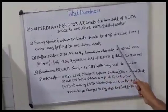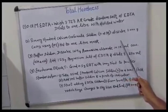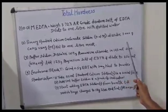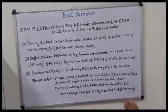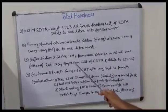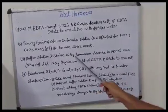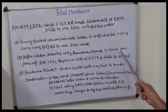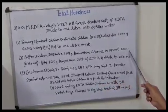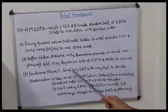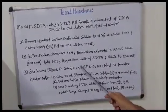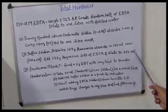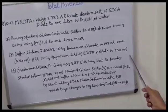This gives us 0.01 molar primary standard calcium carbonate solution. We also make use of a buffer solution by dissolving 16.9 grams ammonium chloride in 143 ml concentrated ammonium hydroxide. To it we add 1.25 grams of magnesium salt of EDTA and dilute to 250 ml.